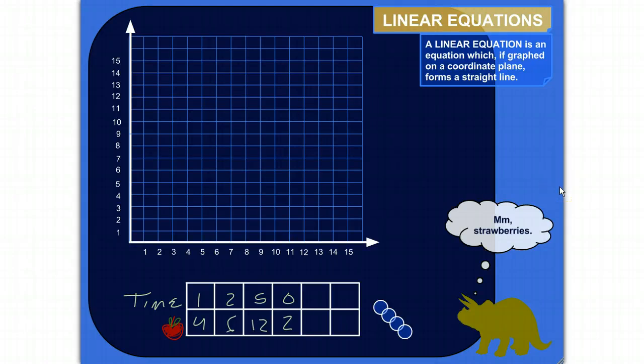A linear equation is an equation which, if graphed, will form a straight line. That's why it's called linear. Linear just means line, or having to do with a line.